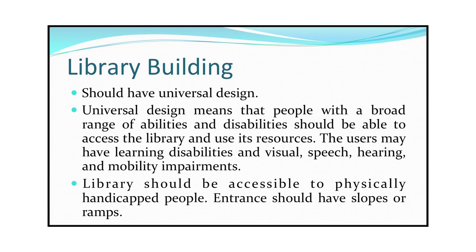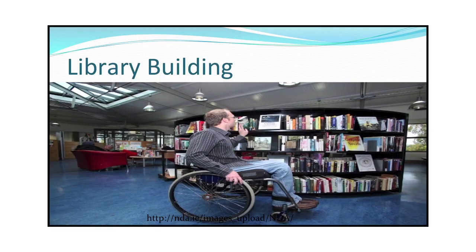The first law also has an implication on library building. Library building should have a universal design, meaning that people with a broad range of abilities and disabilities should be able to access the library and use its resources. Users may have learning disabilities and visual, speech, hearing, and mobility impairments. Libraries should be accessible to physically handicapped people. Entrances should have slopes or ramps to facilitate physically handicapped people so they can easily enter the building, and the insides should be constructed so that people with physical disability are in a position to freely move around.